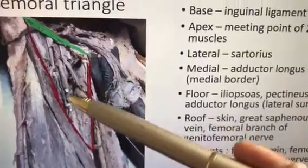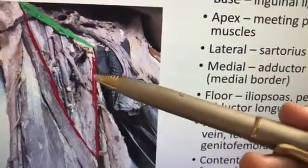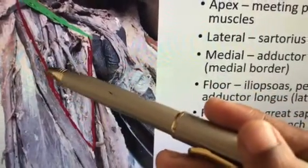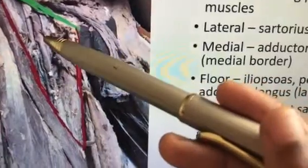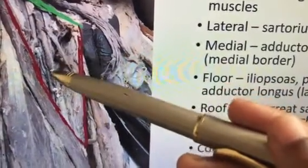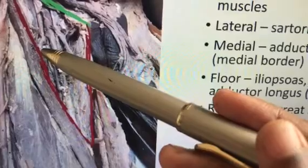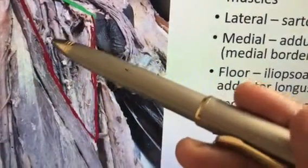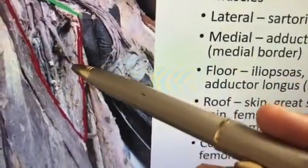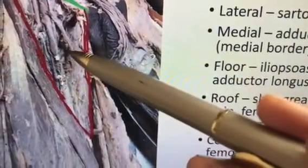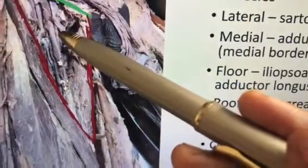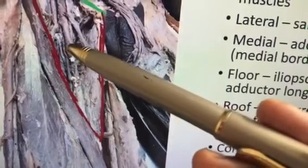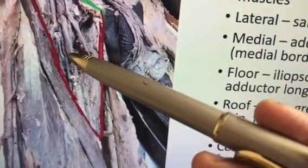Next, you should write the femoral nerve root value and its anterior and posterior branches. For the femoral artery, the main branch is the profunda femoris artery. The profunda femoris divides the femoral nerve into anterior and posterior divisions. For the femoral vein, the most important point is that the great saphenous vein drains into the femoral vein.